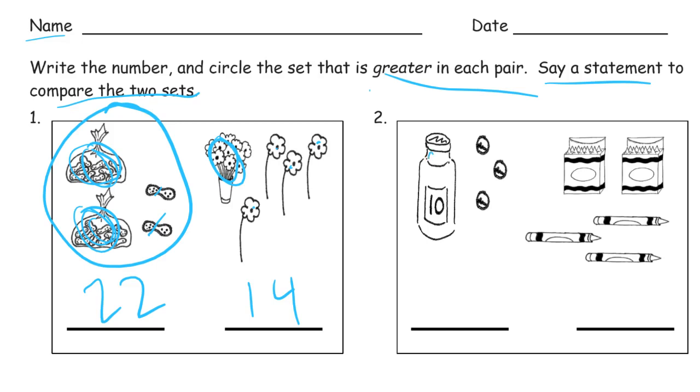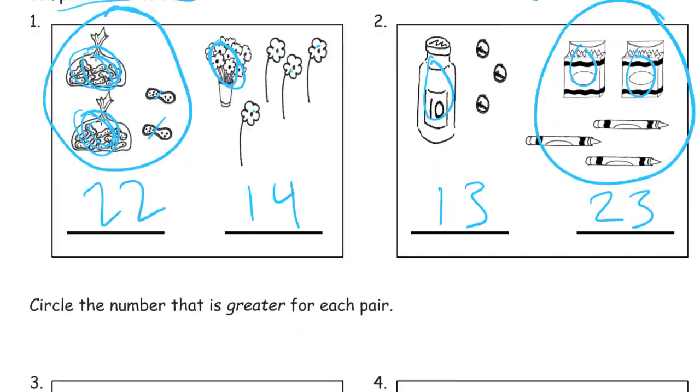And so here I have a group of 10 and then 1, 2, 3, so that's 13. And I have two groups of 10 here, that's two groups of 10, and then three 1s, 23. This one's greater. 23 is greater than 13. That's what we're doing, just counting, saying some stuff out loud, and following the directions.